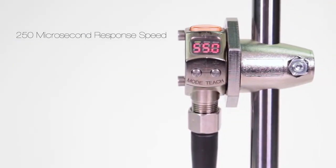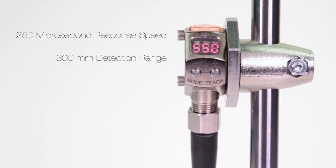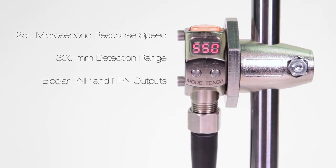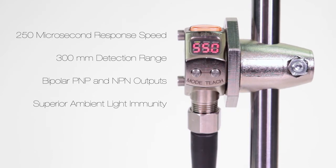With a fast 250 microsecond response speed, a reliable 300mm detection range, bipolar PNP and NPN outputs, and superior ambient light immunity, the Q3X can solve even the most challenging contrast based part detection applications.